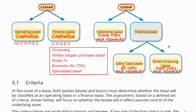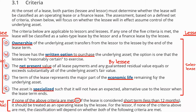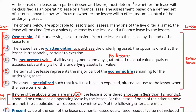The classification is so important for the subsequent treatment. For the lessee, you're always going to have to recognize an asset and the liability, with some exemptions. For the lessor, you're going to do the treatment based on whether it's an operating lease or a finance lease. This is what we're going to cover in the next part.